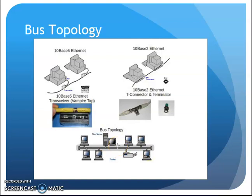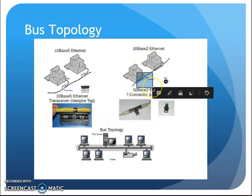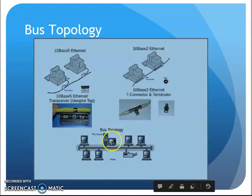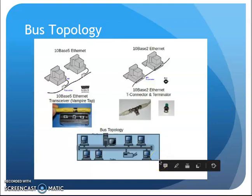If you drew a map of the network, all the devices were literally tapping into that cable, making a bus topology. Ethernet then got a little easier to connect — they used a thinner coax cable and T-connectors that would clip or screw onto the NIC on the back of the computer. But again, the computers were all still connected in this bus fashion.